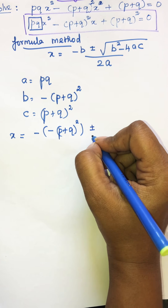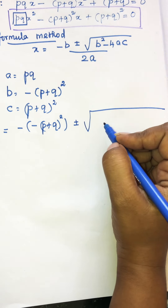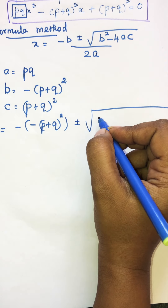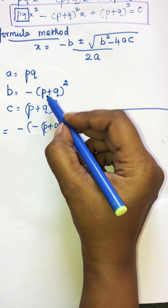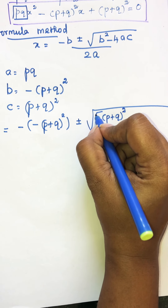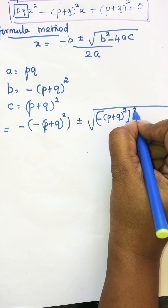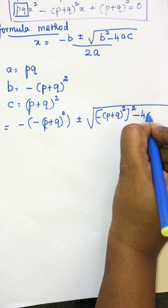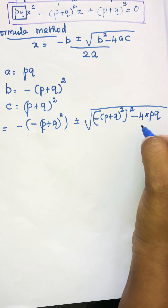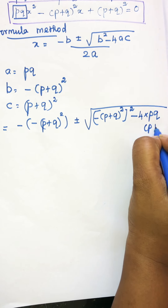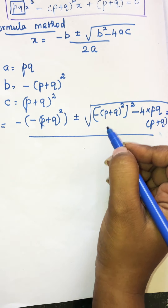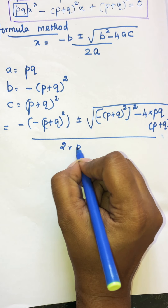Then we have plus or minus root of b squared minus 4ac. What is b squared? b squared means: minus (p plus q)² the whole square. Minus 4 times a — which is pq — and c, which is (p plus q)², all divided by 2a, where 2a is 2 times pq.